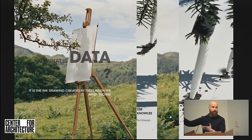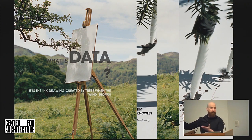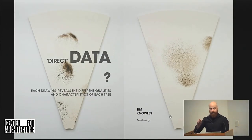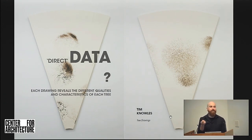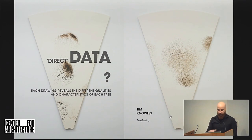Another description: maybe it's not the data found under your foot. It's the ink drawing created by trees when the wind blows. This is a work by Tim Knowles, an artist from the UK. What he's recording is the direct data that every tree produces — you can see the different qualities, which is the data about the branch of the tree, what it's made of, and how the wind is really blowing. So this is plotted data by the tree of the event that's happening at a given moment.